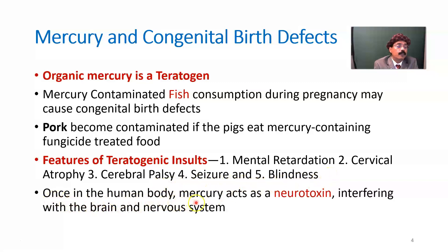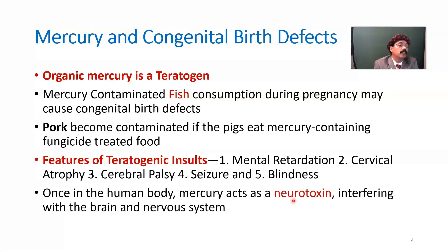Regarding harms in the human body, mercury acts as a neurotoxin. It is a neurotoxin to the fetus, to the infant, to the adolescent, and to the adult, interfering with the brain and nervous system.